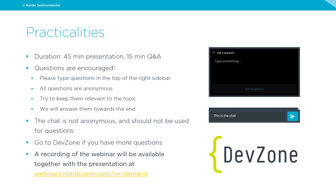Just some quick practicalities before we get started. The duration will be roughly 45 minutes, with a 15-minute Q&A at the end. Questions are encouraged — please type them in the top of the right sidebar. These questions are anonymous. The chat on the bottom right of your screen is not anonymous and should not be used for questions. If you have more questions at the end, feel free to go to Nordic DevZone at devzone.nordicsemi.com. A recording of the webinar will be available together with the presentation at webinars.nordicsemi.com/on-demand.